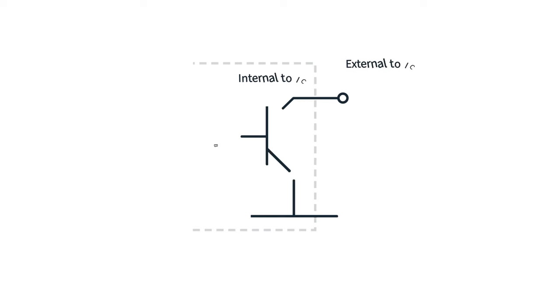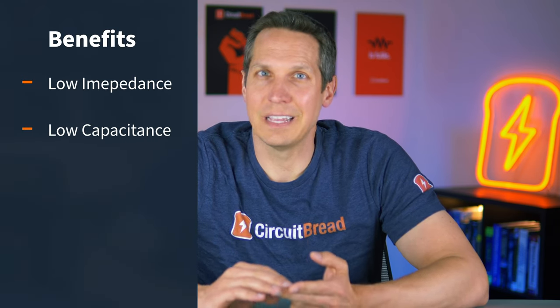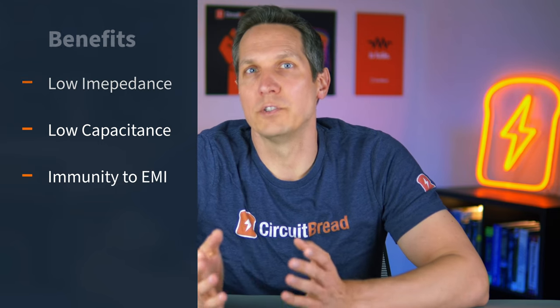The benefit of an open collector or open drain is that it is very effective for sinking current. Sinking current is basically when your device has externally generated current flow through it to ground. With an internal transistor connected directly to ground, you are able to attain a very low impedance, allowing a much higher amount of current to flow through than some other internal configurations. Compared to most other available internal configurations, this has lower impedance, lower capacitance, and greater immunity to electrical noise, which is why open collector or open drain outputs are common.